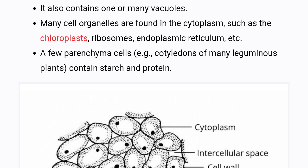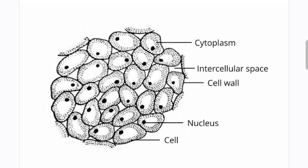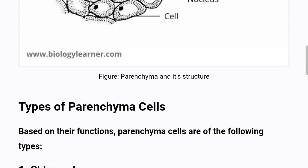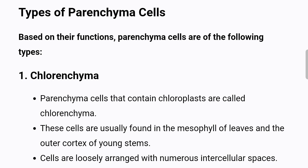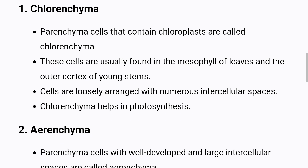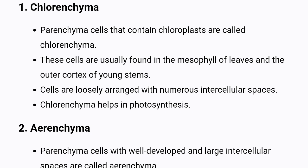Types of parenchyma cells: Based on their functions, parenchyma cells are of the following types. Chlorenchyma: Parenchyma cells that contain chloroplasts are called chlorenchyma. These cells are usually found in the mesophyll of leaves and the outer cortex of young stems. Cells are loosely arranged with numerous intercellular spaces. Chlorenchyma helps in photosynthesis.